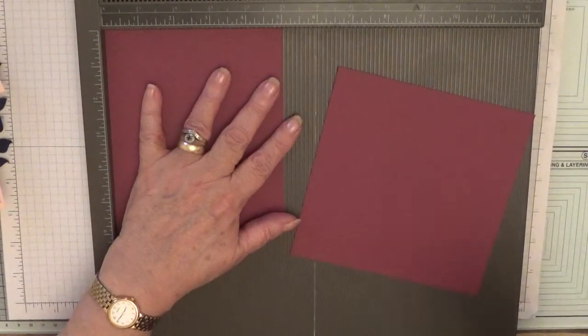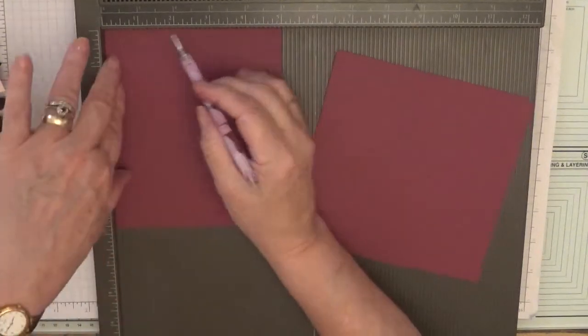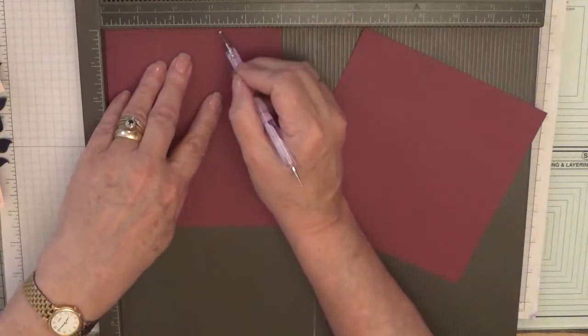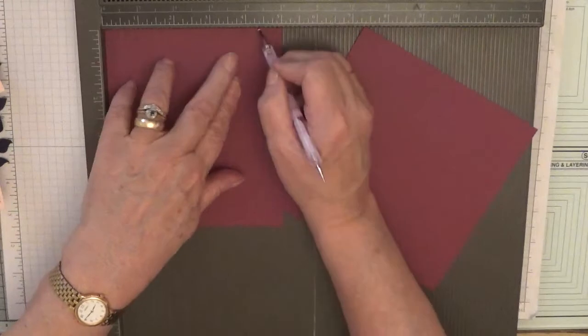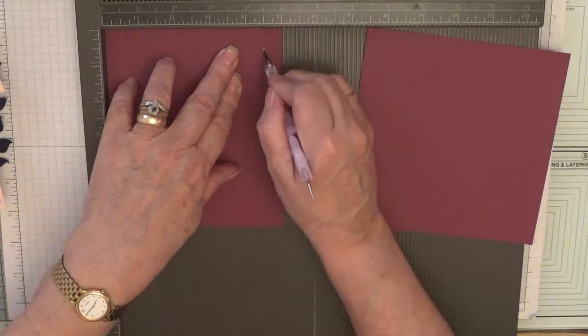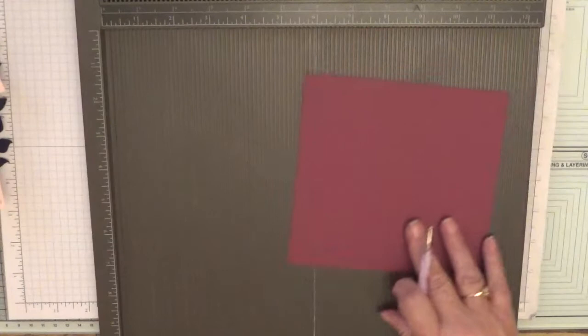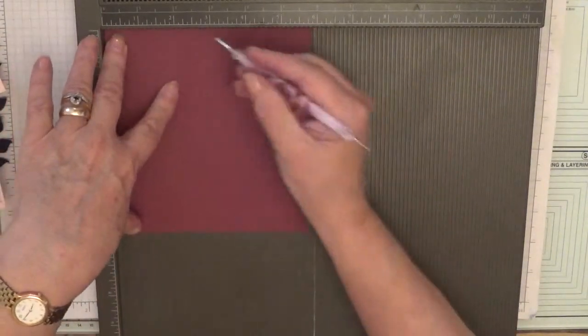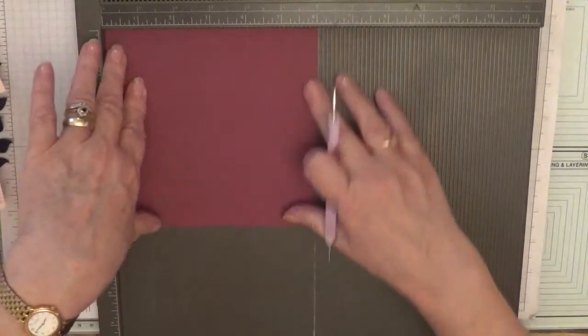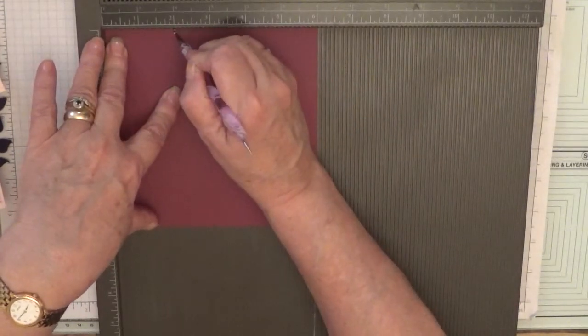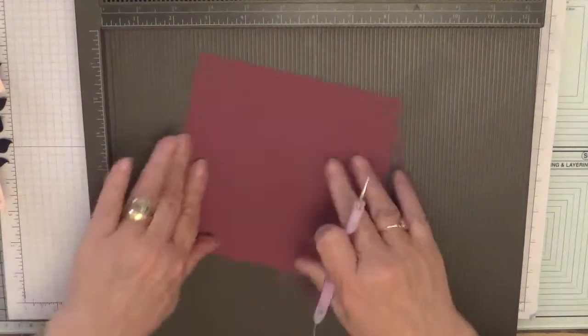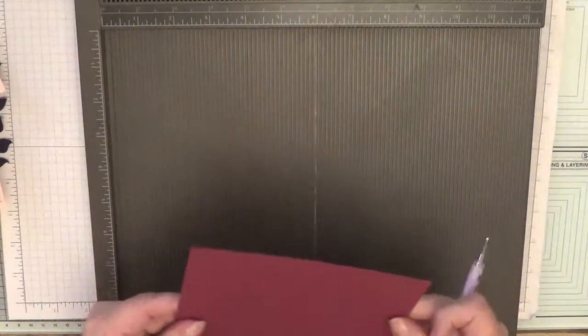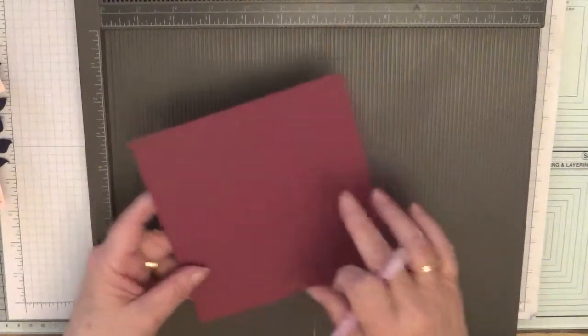With the five inch piece, you want to score at half an inch, one and a half inches, three and a half inches, and four and a half inches. That's all you need to score on there. With the six by five and seven eighths, you want to just do a nudge at two inches and four inches. Turn it round and do the same, two inches and four inches. That is just a guideline for when you put your box on.